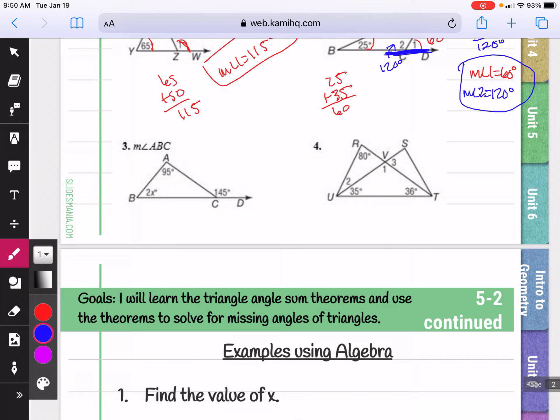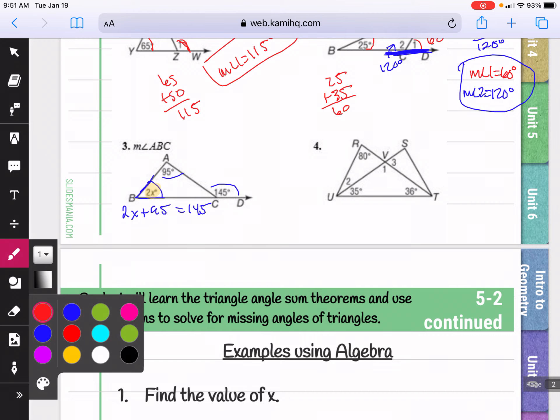So in our next picture, we're finding the measure of angle ABC. ABC would be this angle here, 2X. So we know that 2X and 95 are going to add up to 145. So that gives me an equation. If I add those, I can set them equal to 145, and I can solve this for X.